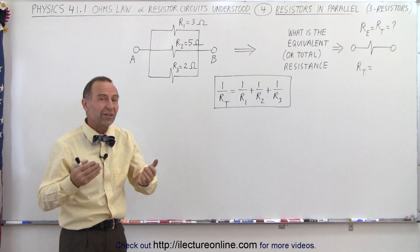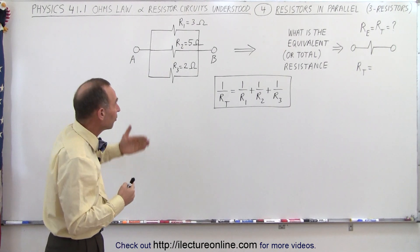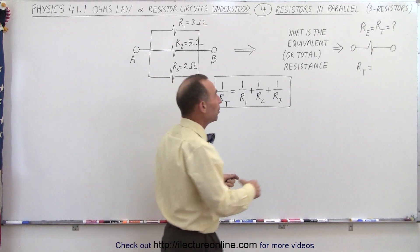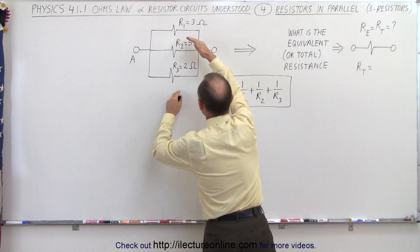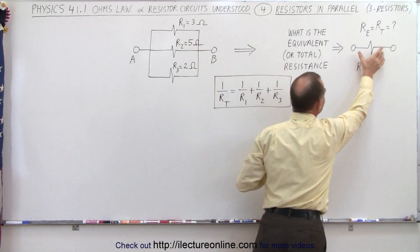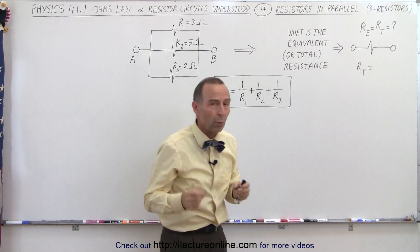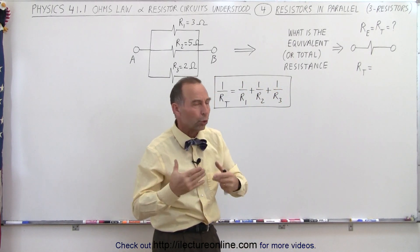And again, the question could be asked, what is the equivalent or total resistance? In other words, what would we replace those three resistors in parallel with in order to get the exact same behavior in the circuit? What will be the equivalent or total resistance?